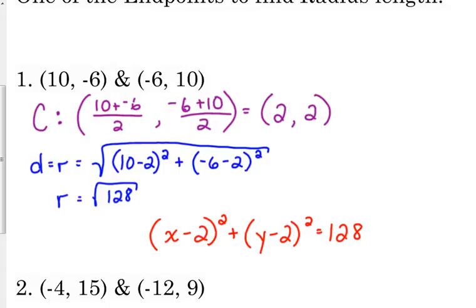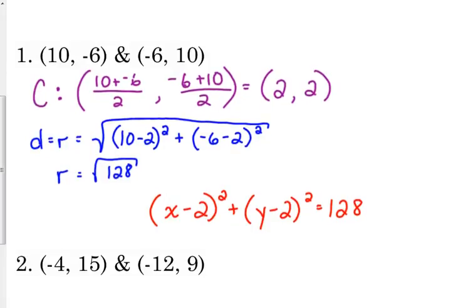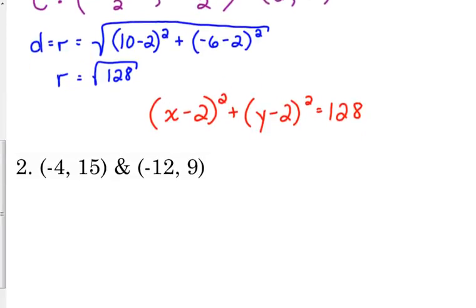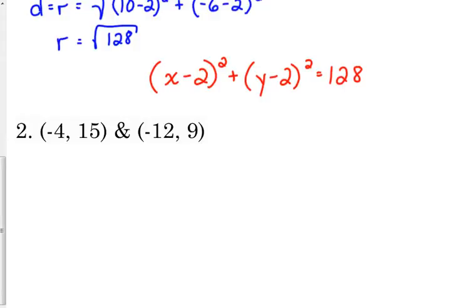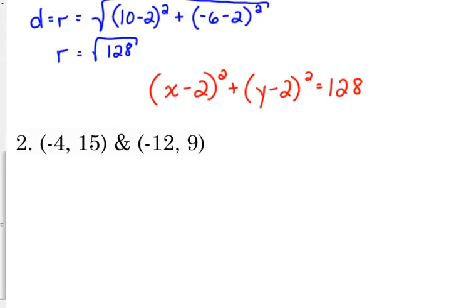So, not that complicated. You've just got to remember the pieces. Let's do another one. And then I'm going to let you practice. So let's say our points are (-4, 15) and (-12, 9).